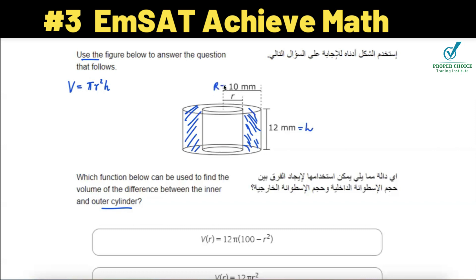The outer cylinder radius, let me assign it as R, is going to be 10 millimeters, and the inner cylinder radius is just r. So what is the difference between the volumes? I can say that the volume of the outside cylinder is going to be π...